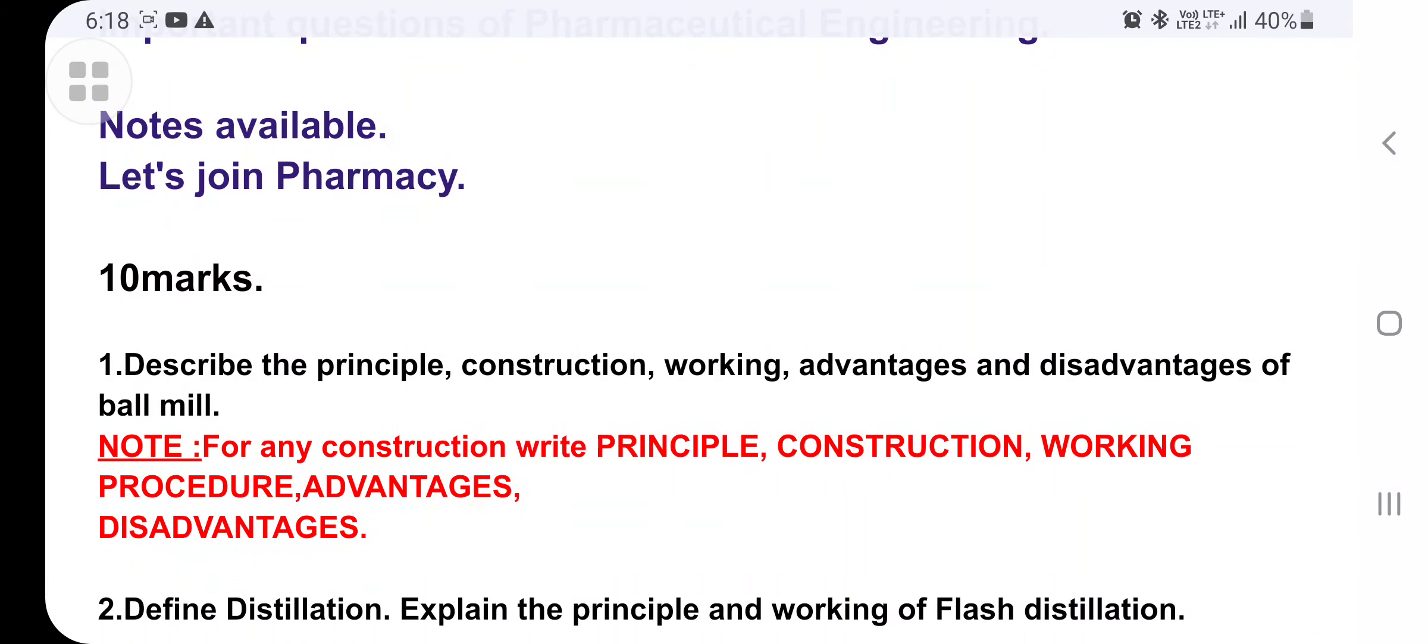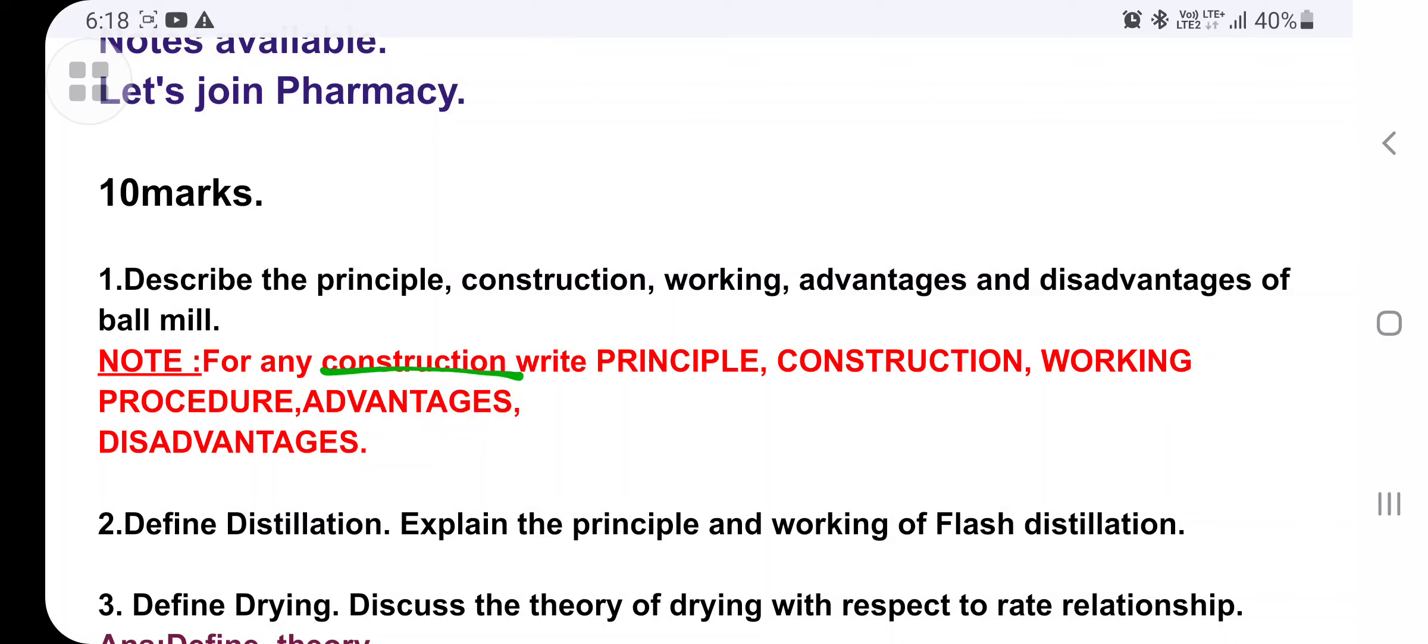First is to describe the principle, construction, working, advantages and disadvantages of ball mill. For any construction question, whether it's ball mill, sea mill, planetary mixer, sigma blade mixer, you have to write the construction. At least write the construction means diagram of that, explain that construction, write the principle.